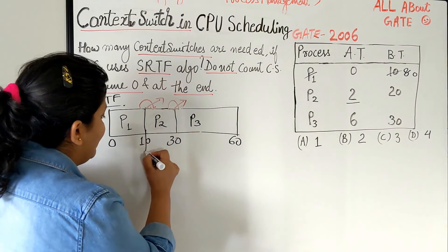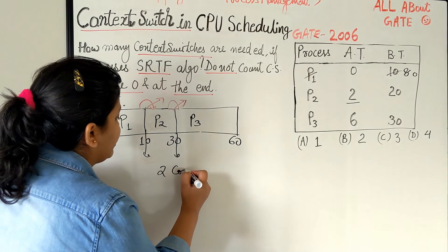So we have 1 and 2. So we have 2 context switches.